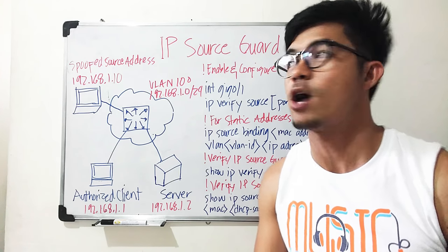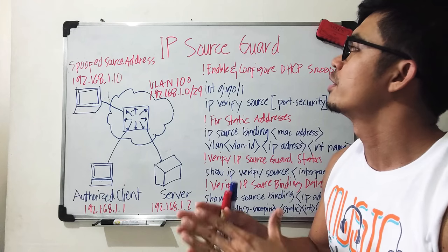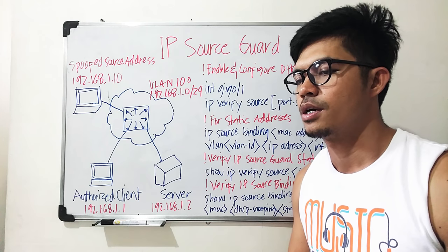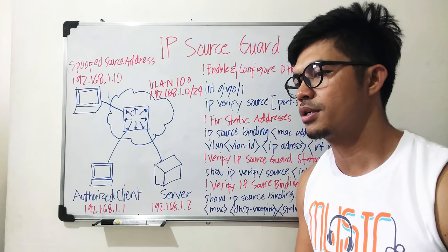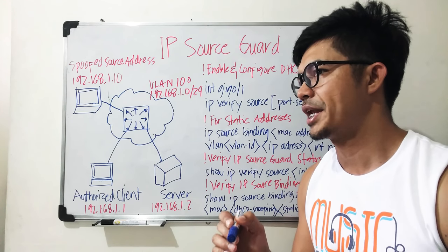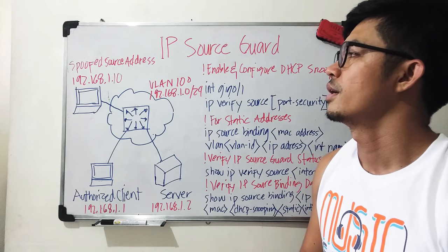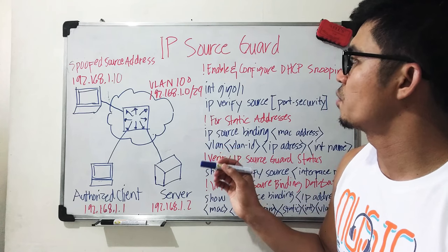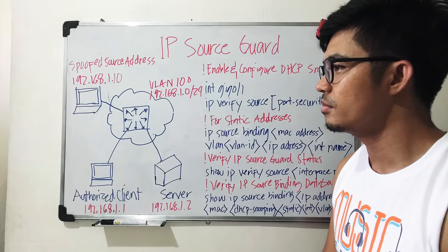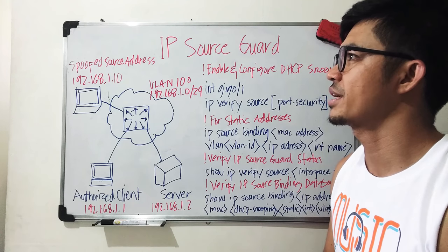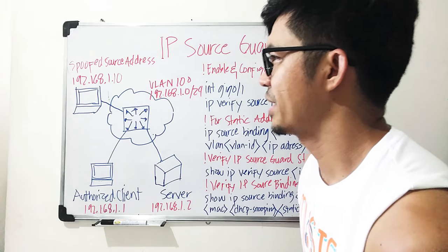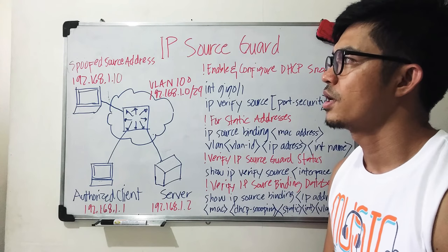In this video I'm going to talk about IP Source Guard. In the past videos I talked about DHCP snooping and DAI or Dynamic ARP Inspection, and IP Source Guard is one of those features that prevent spoofing attacks on a network.